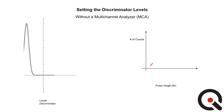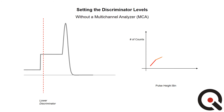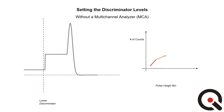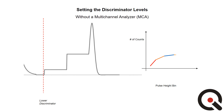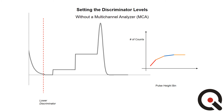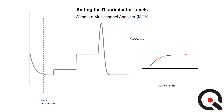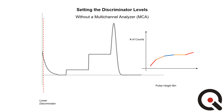Without a multi-channel analyzer, the underlying pulse-height spectrum is not visible and must be inferred from the way in which the neutron counts per unit time change with the discriminator settings. As the lower discriminator setting is moved to the left, the counts per unit time generally increase, except for the valley region, in which it remains constant. These graphs do not always allow one to clearly locate spectrum features such as peaks and valleys.